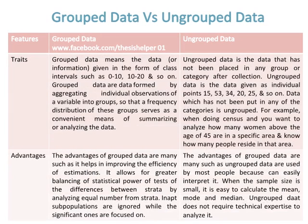The traits of grouped data: grouped data means data or information given in the form of class intervals, such as 0 to 10, 10 to 20, and so on. Grouped data are formed by aggregating individual observations of a variable into groups, so that a frequency distribution of these groups serves as a convenient means of summarizing or analyzing the data.